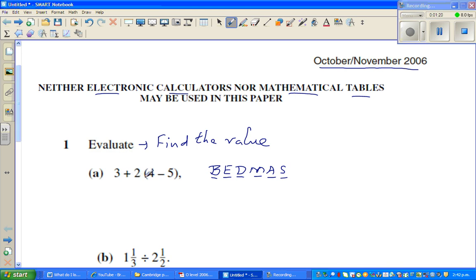Here you have an addition, multiplication, subtraction and a bracket. Always start with the bracket. So this is 3 plus 2 times 4 take away 5 is negative 1. Then you have got addition and multiplication. You have to do multiplication first. You can't add and multiply. So this is 3 plus 2 times negative 1 is negative 2. And 3 plus negative 2 is same as 3 take away 2 which is 1. So this is the answer.